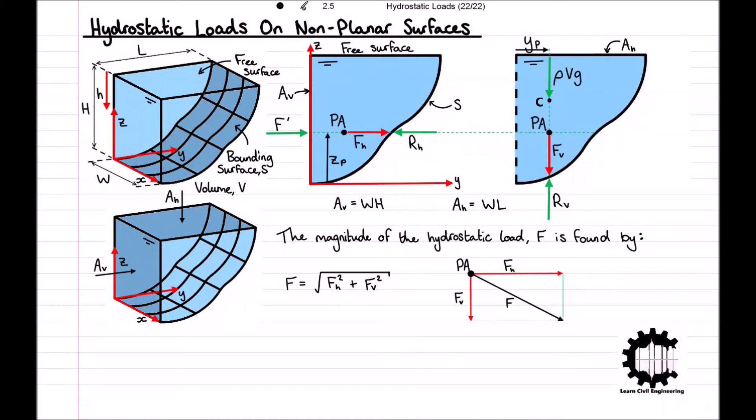Finally, we need to find the direction the force acts. For this simple two-dimensional case where the force only has components in the Y and Z directions, we can find the angle theta that the force makes with the horizontal using theta equals inverse tan of FV divided by FH.